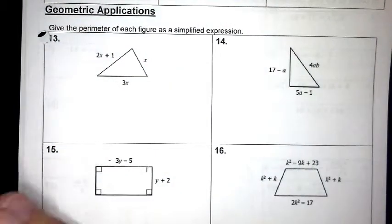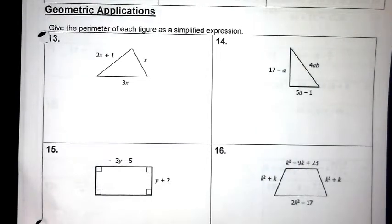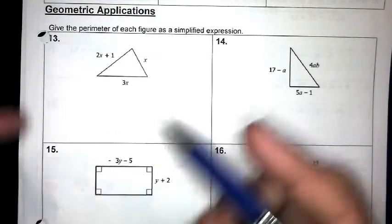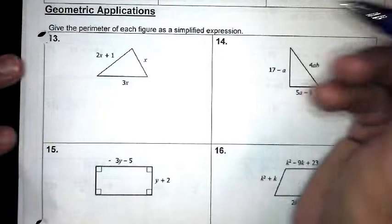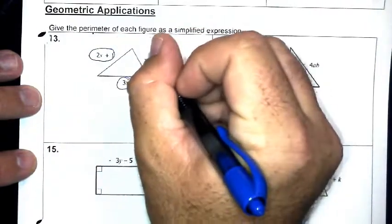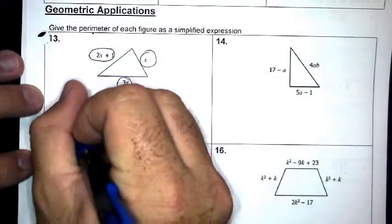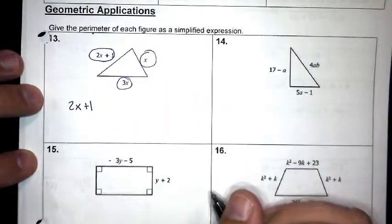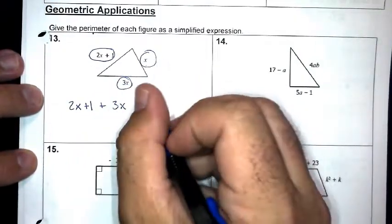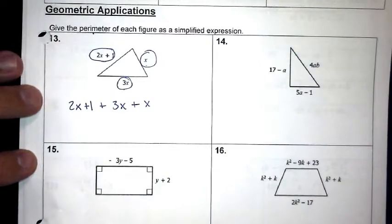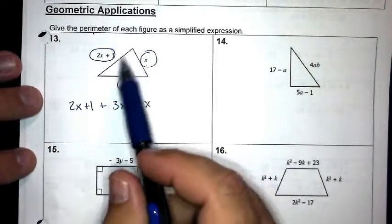My directions say: give the perimeter of each figure as a simplified expression. Who can tell me how to find the perimeter of literally anything? Add all the sides — just add all the sides. Looking at example 13, I have a triangle, so how many sides do I have? Three. So to find the perimeter I'm going to take each of these three sides and add them together.